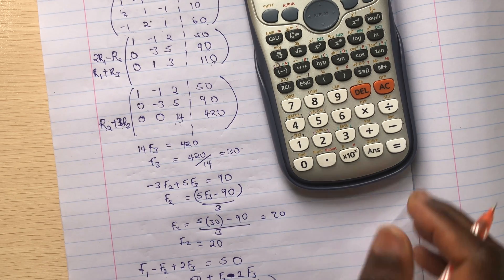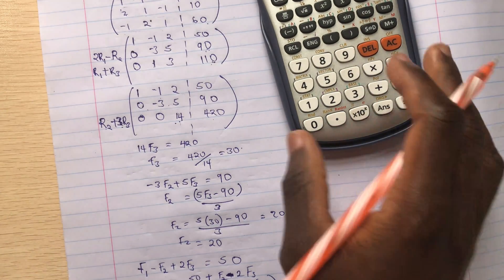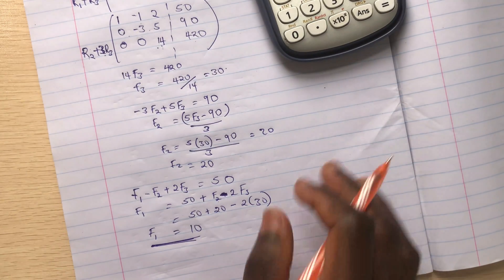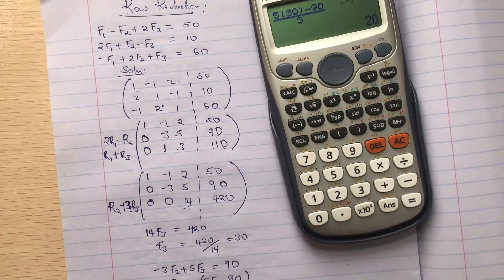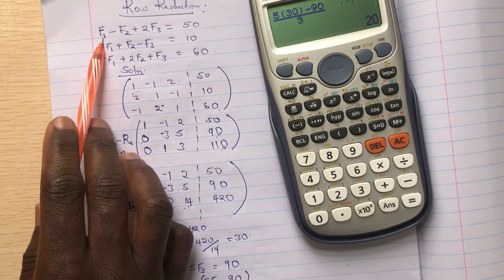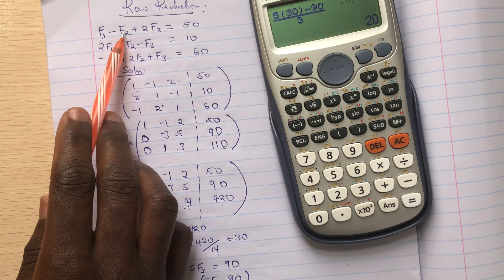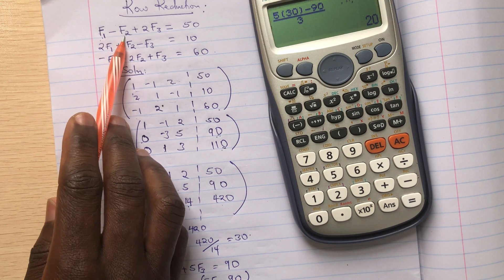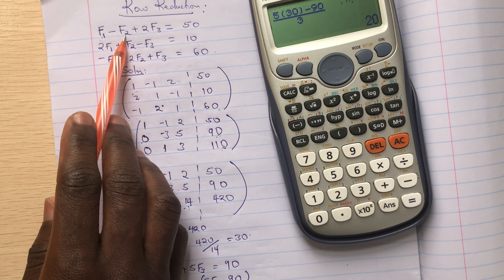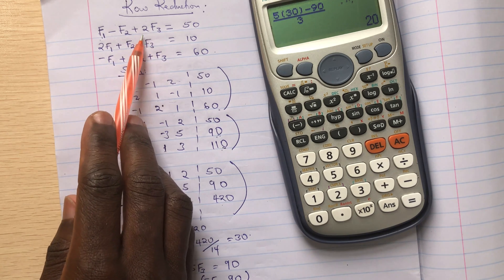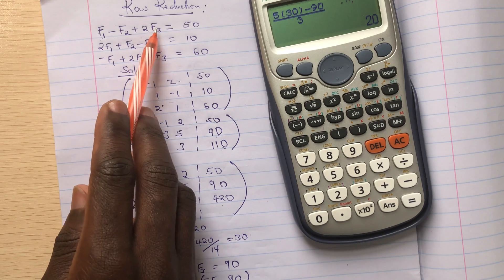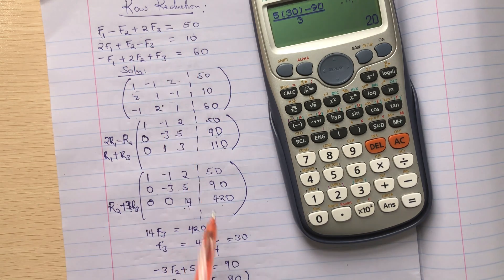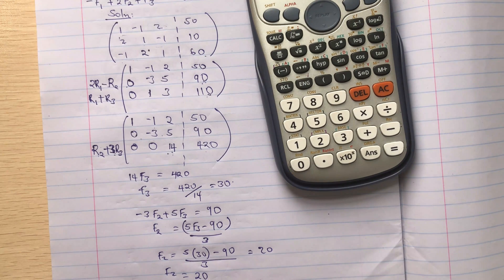So you can see if we want to prove if we're right, we can get one of the equations here. So here, I say F1 is 10, and then F2 was 20, that's 10 minus 20, that's negative 10, plus twice of 30, 60. So negative 10 plus 60, that's 50. So this means that our solution is valid.